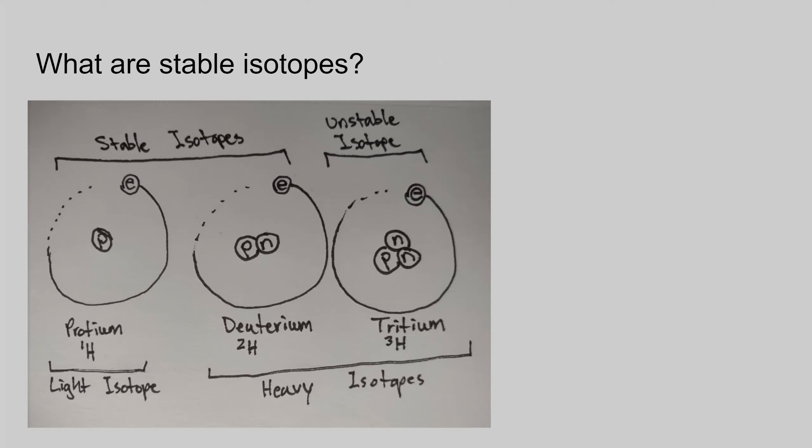The stable isotopes do not decay over time, and they can be used as a way to figure out things like ancient hominid diets. You'll also see at the bottom, I've separated out the light isotopes from the heavy isotopes. What makes deuterium and tritium heavy is that they have a higher atomic weight. Each proton and neutron has an atomic weight of roughly one, so protium has an atomic weight of one, deuterium has an atomic weight of two, and tritium has an atomic weight of roughly three. The electrons are so light that they don't really count towards atomic weight.